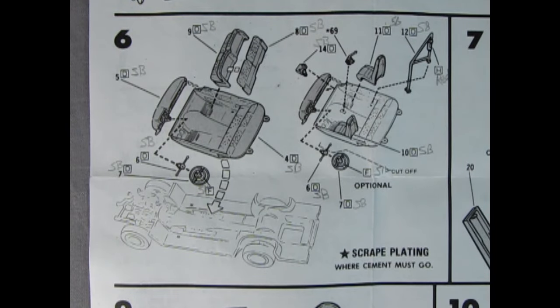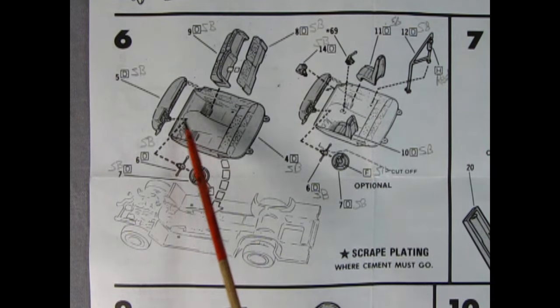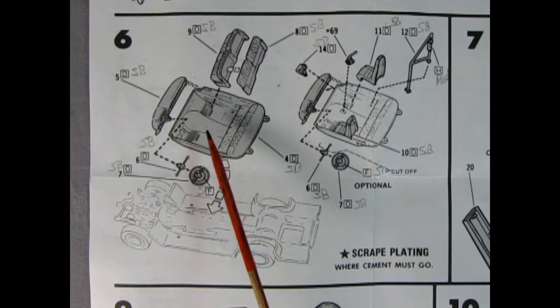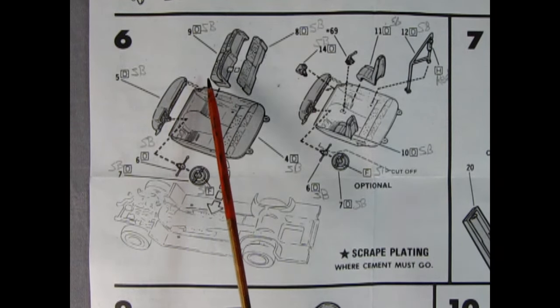Panel six shows our interior going together. Now the first illustration is the stock interior. And the second one is the street machine style. So there we've got a nice interior tub. You've got a steering column with the levers on which is always nice. Then you've got the dashboard and the steering wheel goes on top of the column. And the two-piece bench seat.